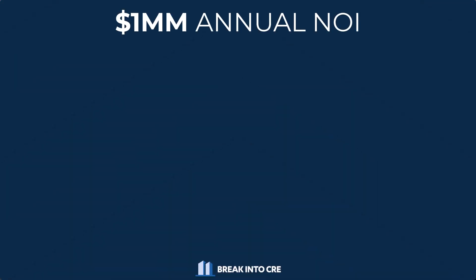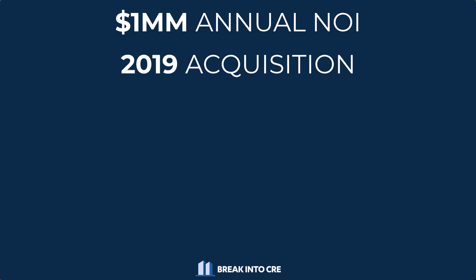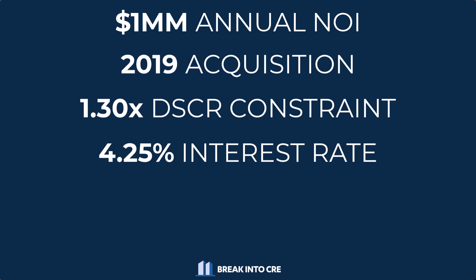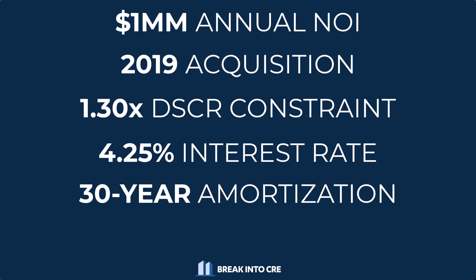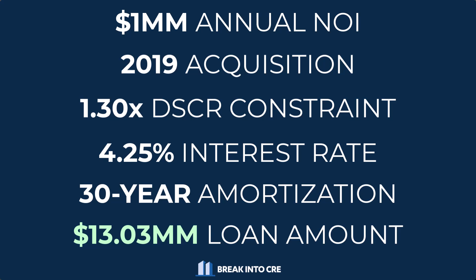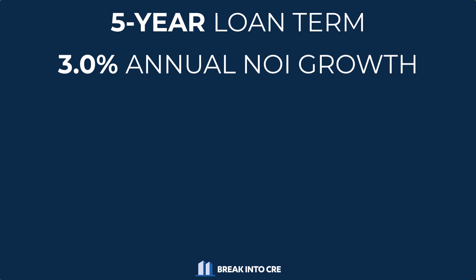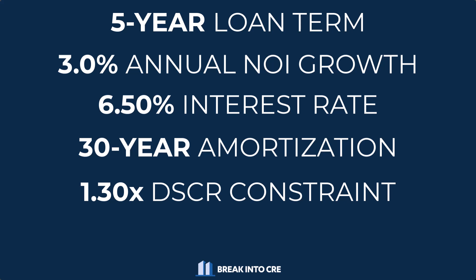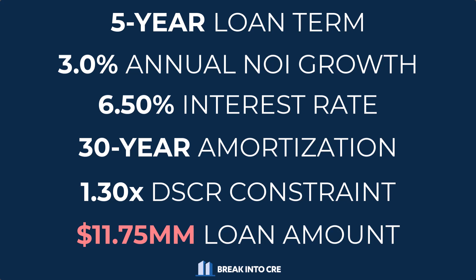To put this into context, if a property generating a million dollars of annual NOI was acquired back in 2019 and financed with a loan sized based on a 1.3x DSCR constraint, using a 4.25% interest rate and a 30-year amortization period, the loan amount at acquisition would have been a little over $13 million. But if we assume that was a five-year loan term and fast forward to 2024, even if we assume the NOI grew by 3% per year over the last five years, if that interest rate was now 6.5% using that same 30-year amortization period and 1.3x DSCR constraint, that same lender would now only be willing to fund $11.75 million in total loan proceeds.